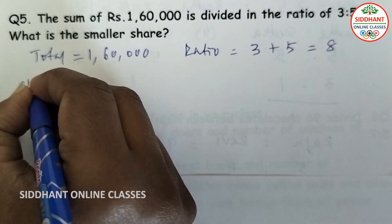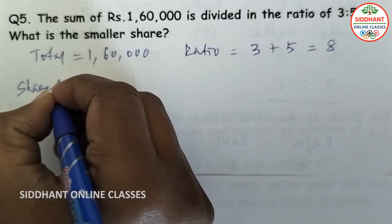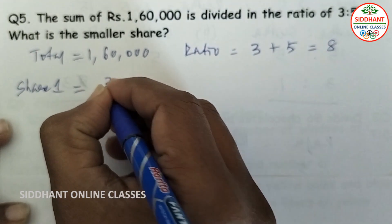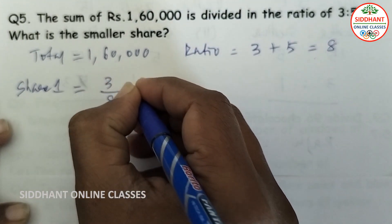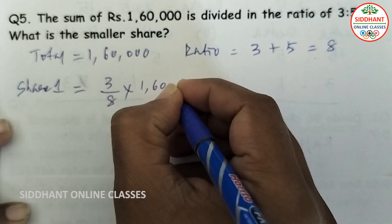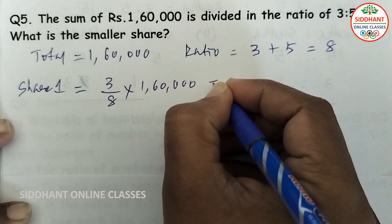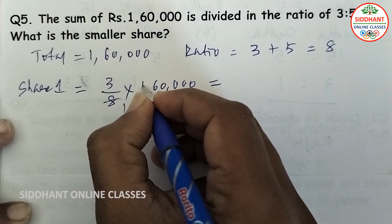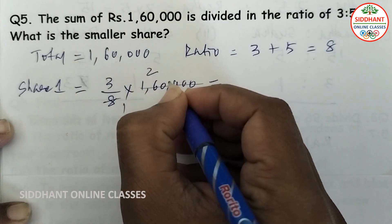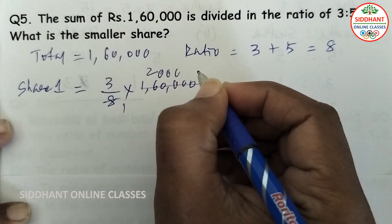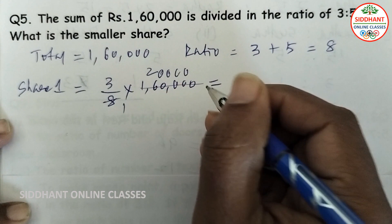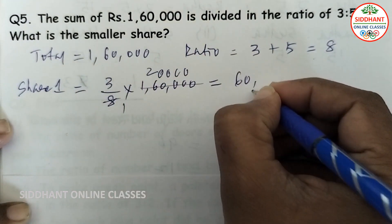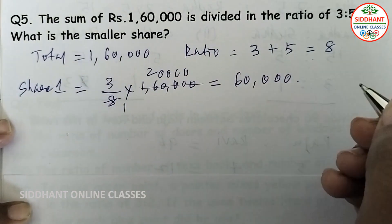Share 1 is 3 parts out of 8 parts, multiplied by 1,60,000. 1,60,000 divided by 8 equals 20,000, and 20,000 into 3 gives rupees 60,000.